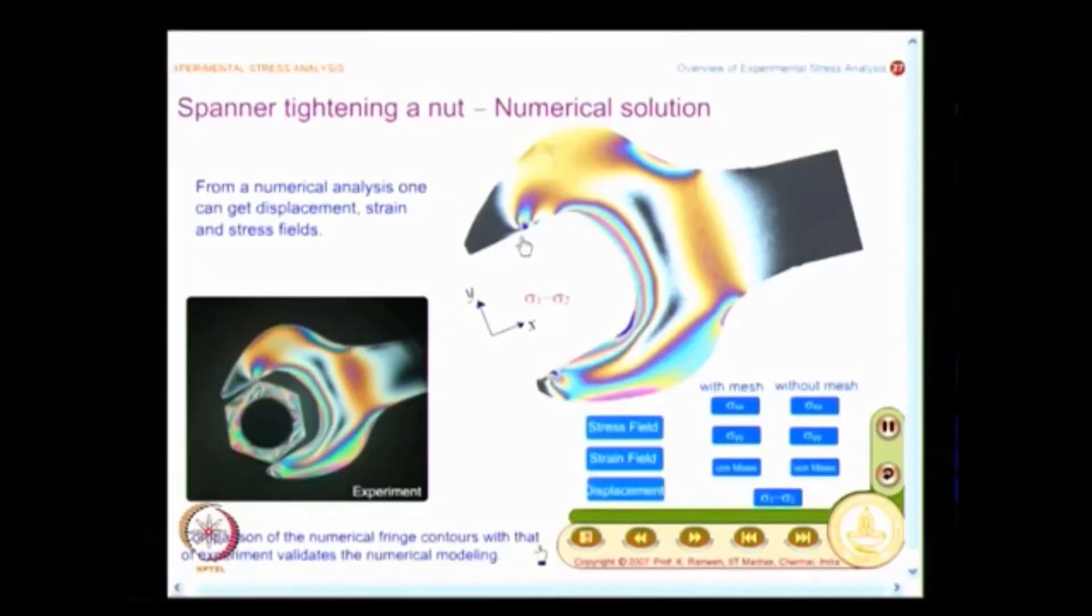And what is seen here is, here I have taken the effort of plotting fringe contours, what you get in an experimental technique and that requires special software to be developed. It is not readily available in standard packages and we have this and this is the best way to compare results of photoelasticity with the actual experimentation. When you do a numerical analysis, you can compare with photoelasticity.